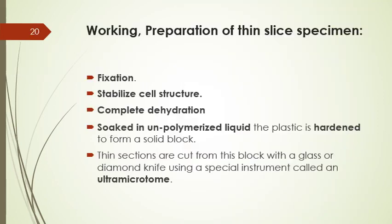For preparation of thin-sliced specimens, very thin cutting is necessary. We usually use plastic. This process is called fixation — after fixation with chemicals to stabilize cell structure, the specimen is dehydrated with different organic solvents. Complete dehydration is essential because most plastics used for embedding are not water-soluble. Next, the specimen is soaked in unpolymerized liquid epoxy plastic until completely permeated, then the plastic is hardened to form a solid block. Thin sections are cut from this block with a glass or diamond knife using a special instrument called an ultramicrotome.